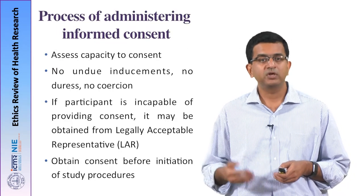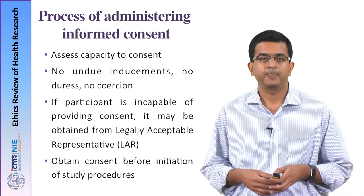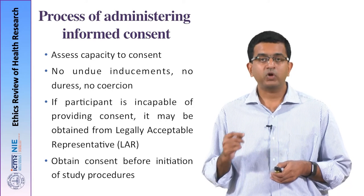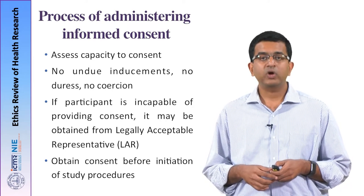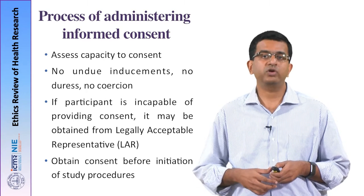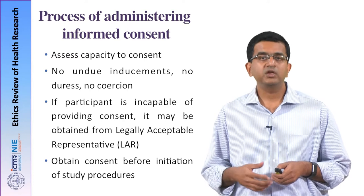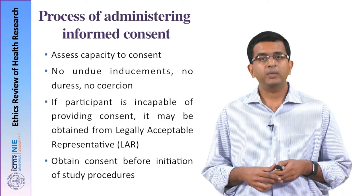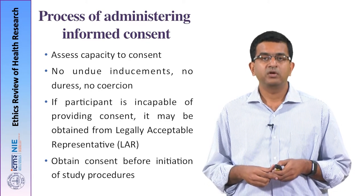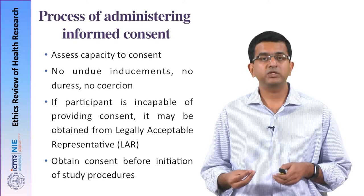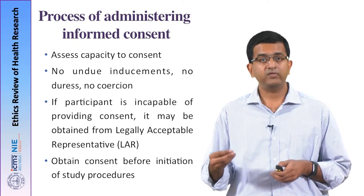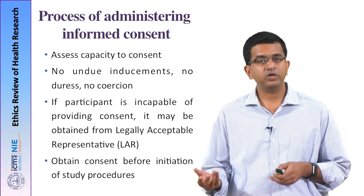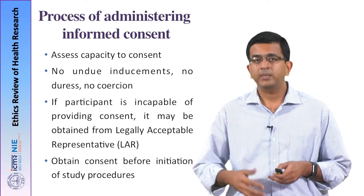First let us go through the various steps in the process of administering an informed consent. The first and foremost thing that has to be kept in mind is to assess the capacity of the research participant to give the consent. As we have seen in the previous session, capacity is determined by the age of the participant, their mental capacity, whether they are suffering from any mental disabilities, whether they are conscious or unconscious, and their general thinking ability.